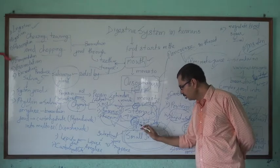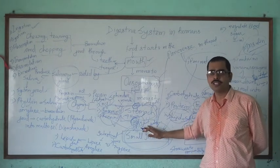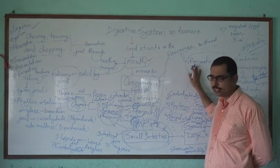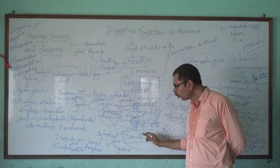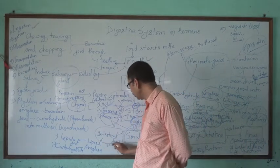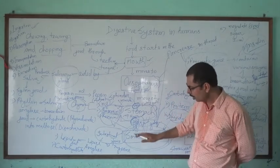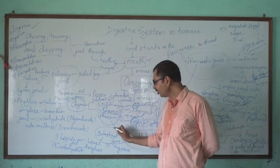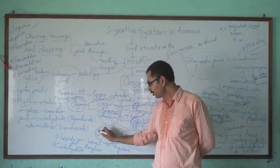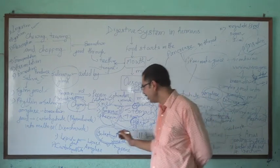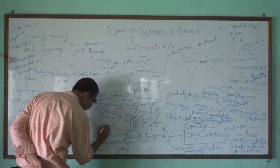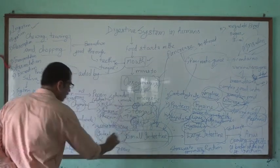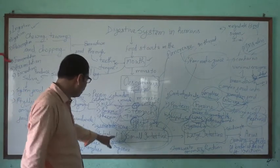In the small intestine, food interacts with bile and pancreatic juice. The small intestine also produces its own juice, called intestinal juice. The other name for intestinal juice is succus entericus.